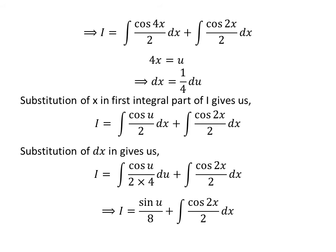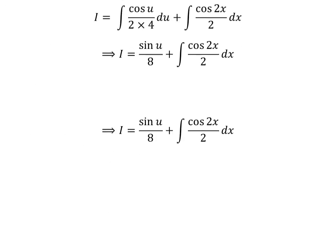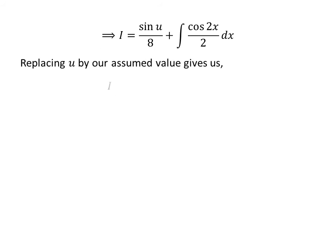As 2 times 4 is 8, and the integral of cosine of u is sine of u, so i is equal to sine of u upon 8, plus the integral of cosine of 2 times x upon 2 with respect to x. Now, substituting u back by its assumed value, i is equal to sine of 4 times x upon 8, plus the integral of cosine of 2 times x upon 2 with respect to x.